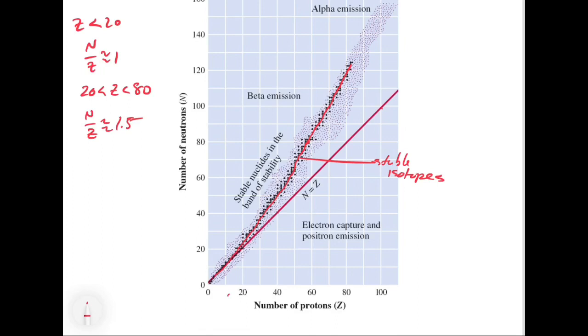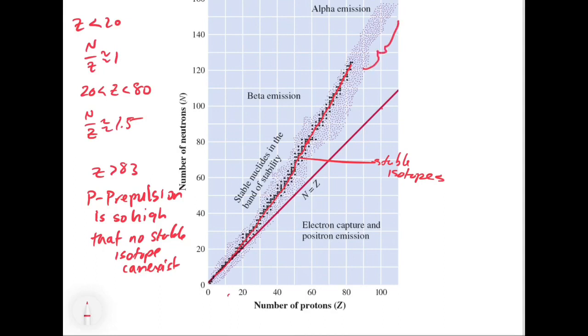And then what happens is when we get into Z greater than 83, the proton to proton repulsion is so high that basically there's no number of neutrons that are going to hold it together. So high that no stable isotope can exist. So above 83, you start to see all of the isotopes become unstable.